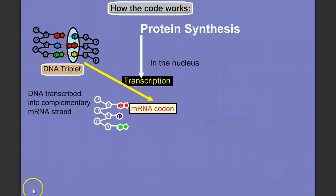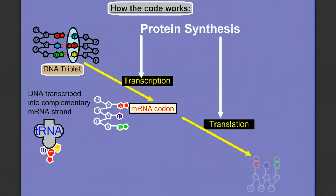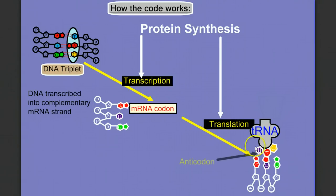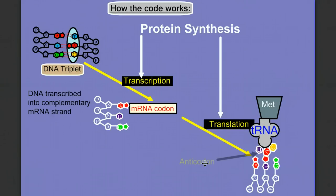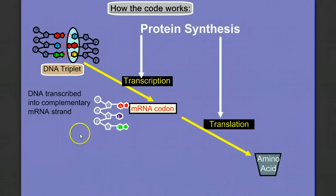So one DNA triplet becomes one messenger RNA codon. In the second stage of protein synthesis, translation, which occurs at the ribosome, the messenger RNA is translated into an amino acid with the help of transfer RNA. Transfer RNA with the complementary anticodon — a three-letter code that's the complement to the codon of the messenger RNA — will come in and bring with it a very specific amino acid, in this case methionine. So this DNA triplet TAC is transcribed into messenger RNA codon AUG, and the transfer RNA with anticodon UAC carries methionine and lines up its anticodon with the codon. So TAC is coding for methionine. We can go from a DNA triplet to an amino acid with transcription followed by translation.